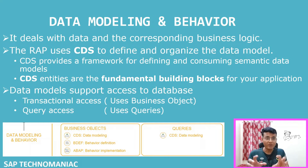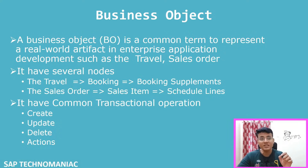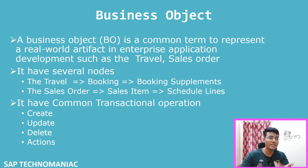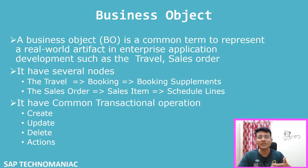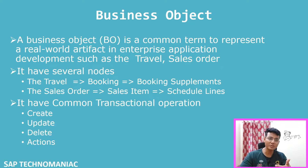We will discuss what a business object is first, then behavior definition and implementation. A business object always represents a real-time artifact. For example, a sales order is one business object, an invoice is another, a delivery is another, a purchase order is another, and in a travel scenario, travel itself is a business object.